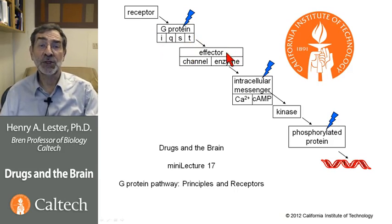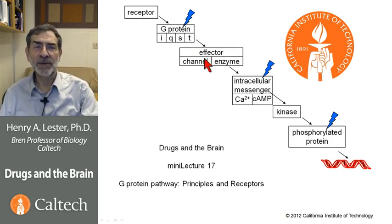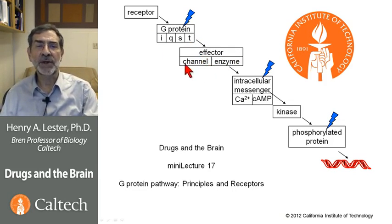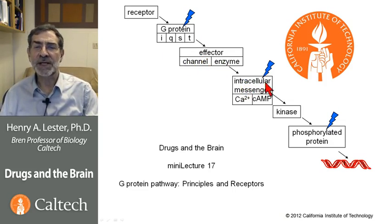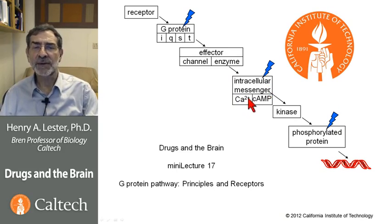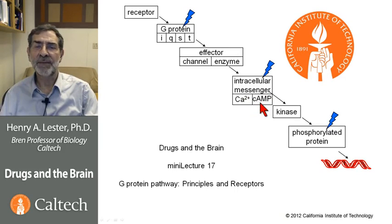This, in turn, activates an effector, which can be either a channel or an enzyme. This, in turn, activates an intracellular messenger, usually either soluble calcium or a cyclic nucleotide, primarily cyclic AMP.